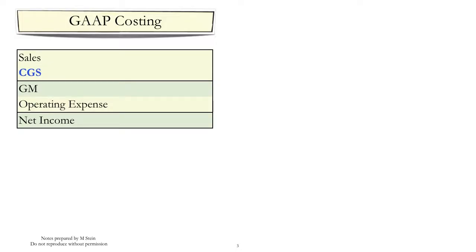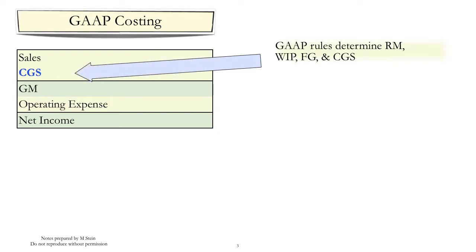GAAP costing is used in the preparation of financial statements. However, GAAP costs are not correct in some circumstances, and it is important to understand how GAAP costs are created in order to be able to recognize situations where GAAP may not measure relevant costs. GAAP rules determine raw materials, work in process, finished goods, and cost of goods sold valuations. Unfortunately, product cost distortions affect the valuations placed by GAAP.